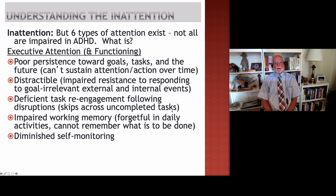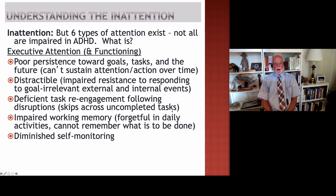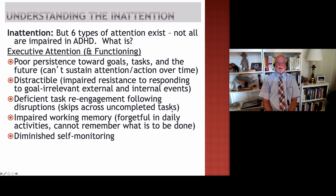How can we understand the inattention symptoms beyond just the way they are described in the DSM-5? We need to understand that there are at least six different kinds of attention that our brain allows us to have, and ADHD does not interfere with all of these kinds of attention — such things as arousal, alertness, and the focus of attention. Instead, ADHD interferes with sustained attention. A better term for that is persistence toward goals, toward tasks, persistence toward the future in general. ADHD is interfering with the ability to string together long chains of motor actions needed to accomplish a longer-term goal. They can't persist toward their goals or assigned tasks. In other words, the problem with attention is one of attention to the future — and that's a very special kind of inattention.